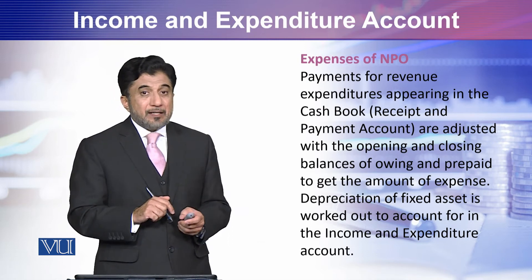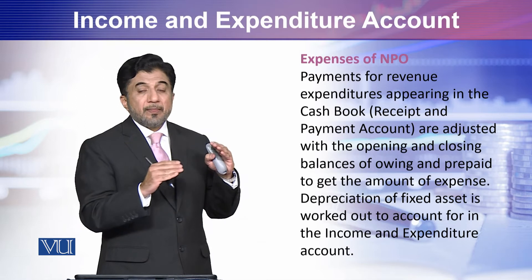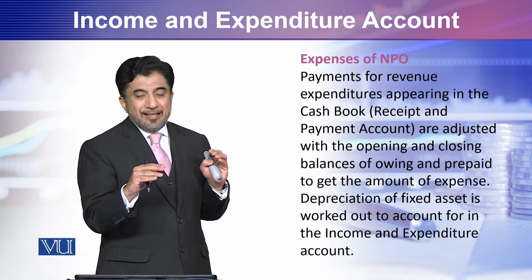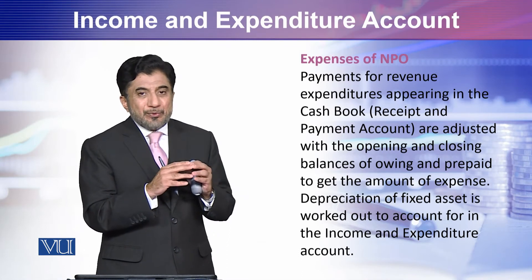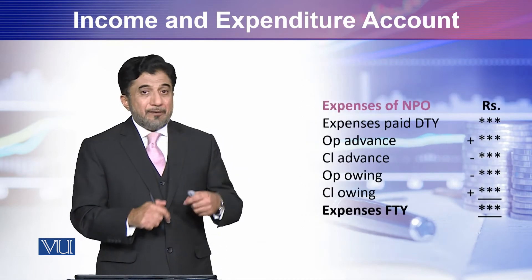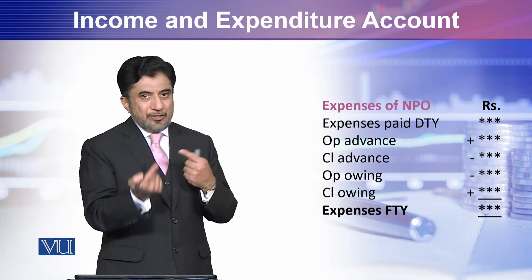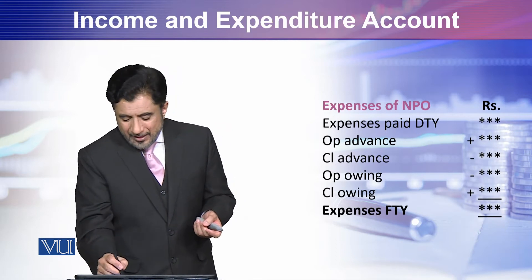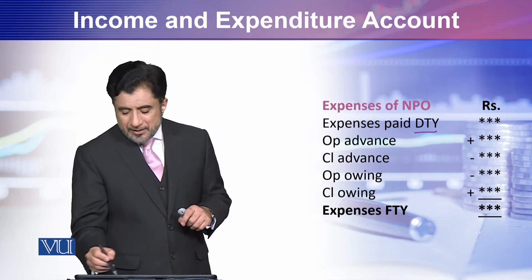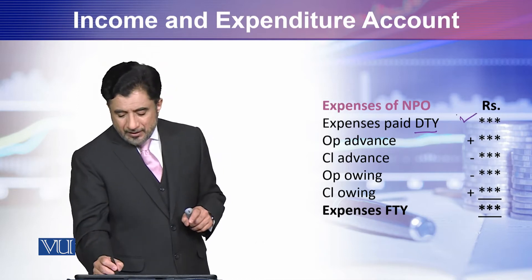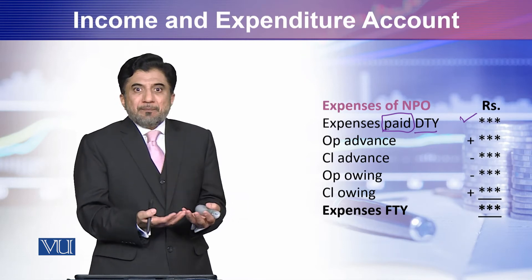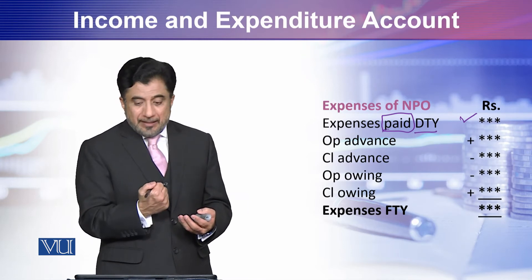For expenses I also told you that you have to pass them through the filter — pick from cash and pass through the accrual filter. When it passes through the accrual filter, it becomes your expense for the year. For this, the basic formula you have already learnt. Expenses paid during the year — DTY stands for during the year — those expenses paid are visible on the cash book payment side. Pick those expenses from there, and now apply the accrual filter.